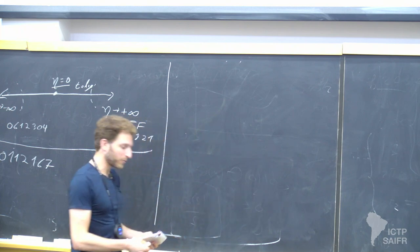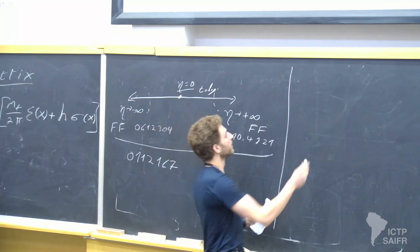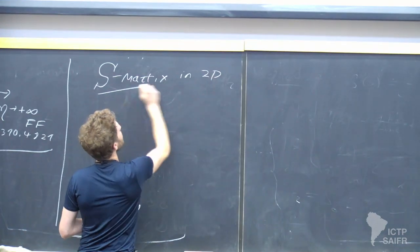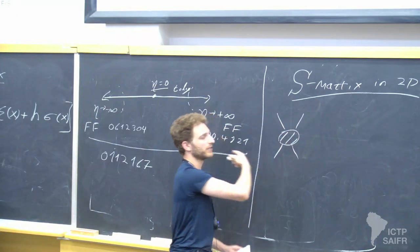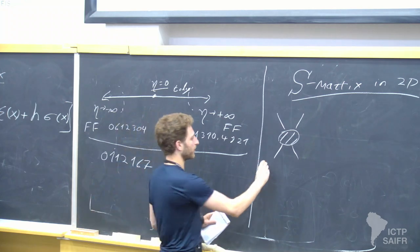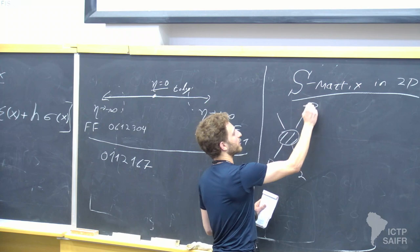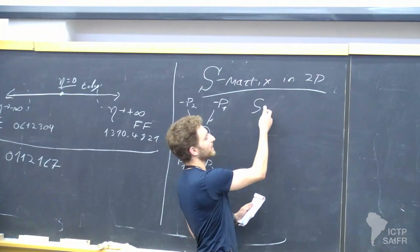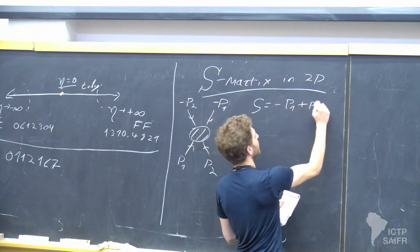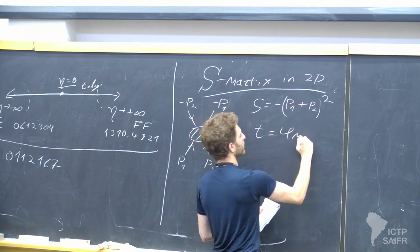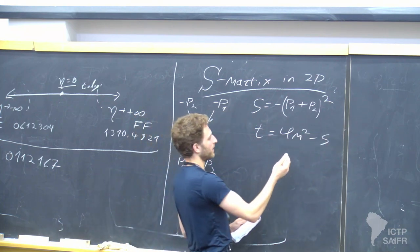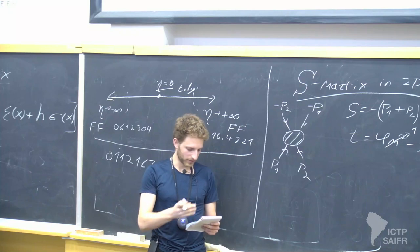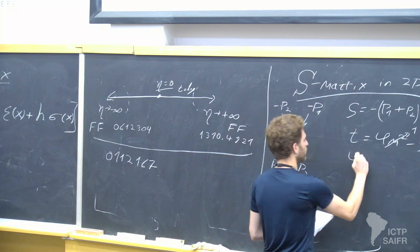To discuss the analytic properties of the S-matrix, I'll gloss over details. I'm only going to discuss the S-matrix of the lightest particle scattering with itself: with momenta p1 and p2, we have by momentum conservation the outgoing particles as minus p1, minus p2. So we have only one Mandelstam invariant S equals minus (p1 plus p2) squared, and T equals 4m squared minus S. For simplicity I'll set m to 1.